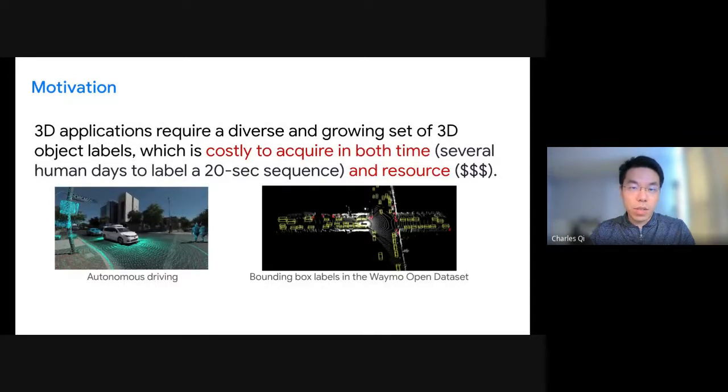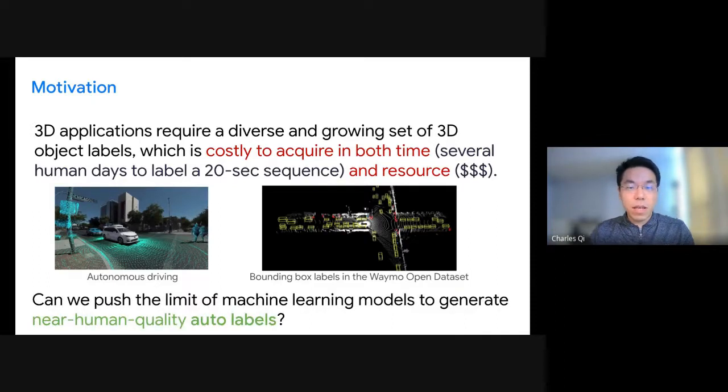We know that 3D applications such as autonomous driving require lots of 3D labels for both model development and evaluation. However, labeling 3D data is very costly in both time and money. For example, fully annotating a 20-second sequence can easily take a human annotator several days. To scale up the system, we need more automation. Can we push the limit of machine learning models to generate near-human quality auto-labels? Is it possible that we can develop some offline or offboard version of perception that is much more powerful than the onboard ones?